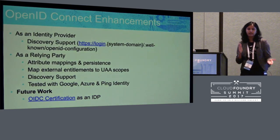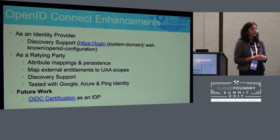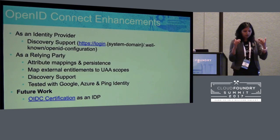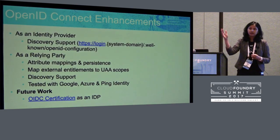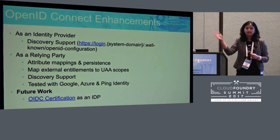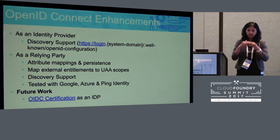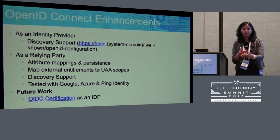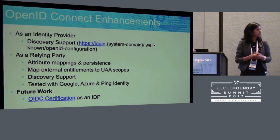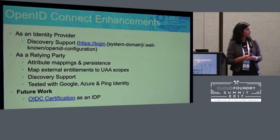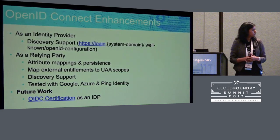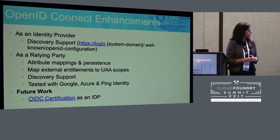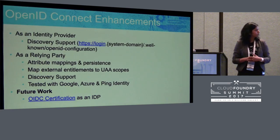As with any federation protocol, there is another aspect which is the relying party support. From a relying party perspective, for existing OpenID Connect providers out there, we are able to trust the authentication and the claims coming from those providers. We have tested this integration with Google and Azure. We ourselves didn't test Ping — one of the partners did. Foundation member GE uses Ping heavily, and they were able to test the OpenID Connect configuration with Ping.